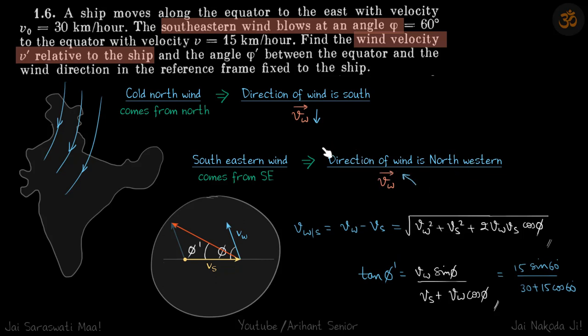This is a major confusion among students that for southeastern wind, they take the wind direction incorrectly and don't get their answers. When we say southeastern wind, it is coming from southeast, so it's going towards northwest. The direction of the wind is towards northwest.